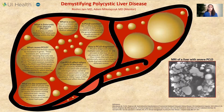This disease is diagnosed when multiple cysts — at least 10 to 20 — are seen in the liver on an ultrasound, CT, or MRI scan. Most times, cysts are accidentally discovered when an imaging study is ordered for a different reason.